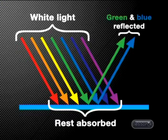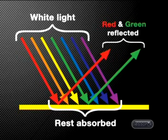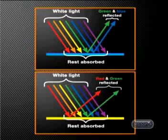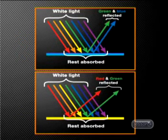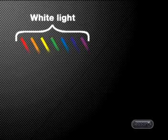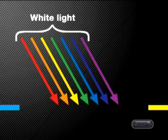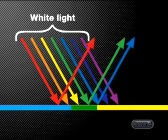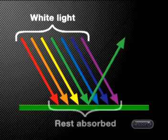Let's explore why these two pigments together produce the colour green. Cyan light is formed by combining green and blue light, so a cyan pigment only reflects green and blue light — all the other colours of light are absorbed by the pigment. Yellow light is formed by combining red and green light, so a yellow pigment only reflects red and green light, and all the other colours are absorbed. By carefully looking at these two diagrams, when we mix cyan and yellow pigments together, the only colour that is not absorbed by this combination is green. We therefore see green because that is the only colour reflected.